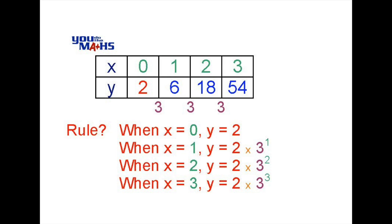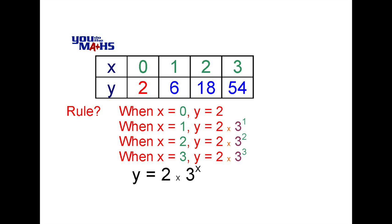In terms of a rule, every time we go to an increasing value of x, the index or the exponent of the 3 changes. So our rule becomes y equals 2 multiplied by 3 to the power x.